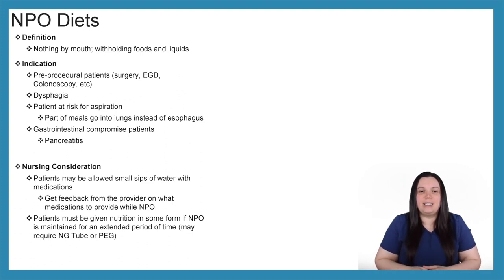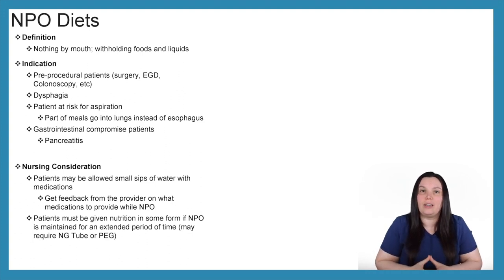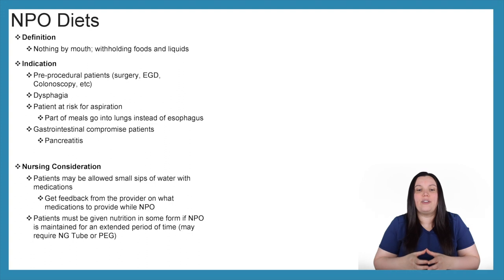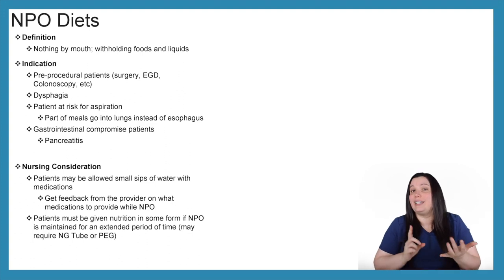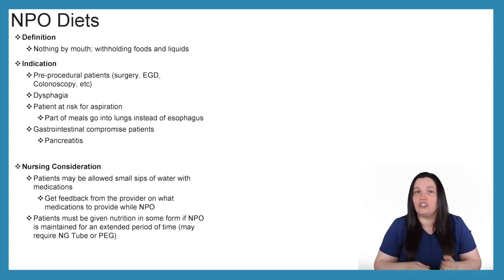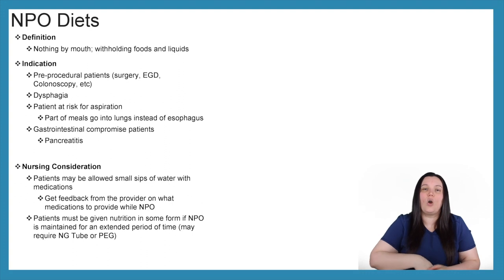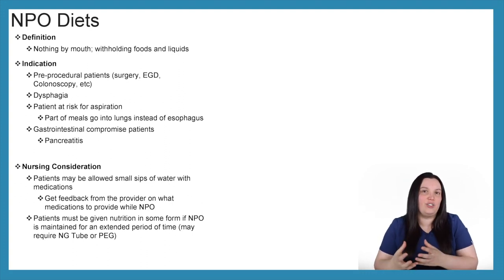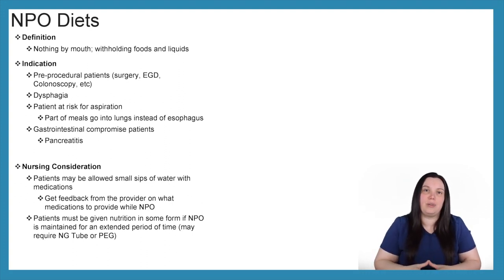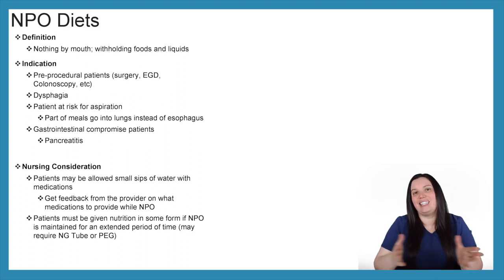Patients must be given nutrition in some form — we can't leave a patient NPO forever. So we either place an NG tube, which is a tube that goes into the nose, down the esophagus, into the stomach, or the patient has a peg tube placed if they are going to be NPO for an extended period of time.